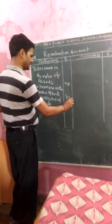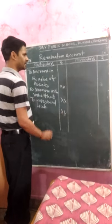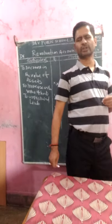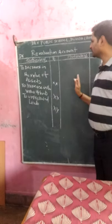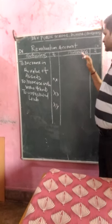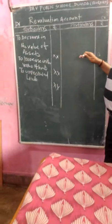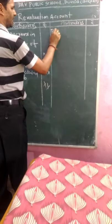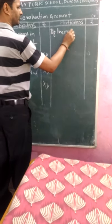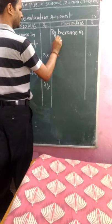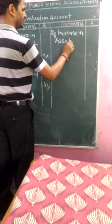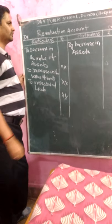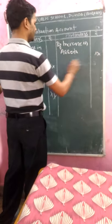So, three items are in the Debit side. Now, coming to the Credit side — in the Credit side, we write the items of gains for the firm. The first item is increase in assets; increase in assets is a gain for the firm.